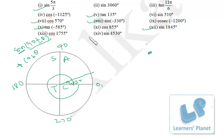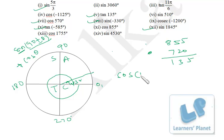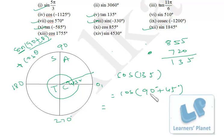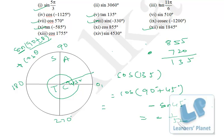Let's take the last one: cos 855°. First deduct two circles (720): 855 − 720 = 135°. So cos 855° = cos 135° = cos(90 + 45). When adding/subtracting from 90, cos converts to sine. So write sine 45. Now 90 + 45 is the second quadrant where cos is negative, so put a minus sign: it's minus sine 45 = minus 1/√2.